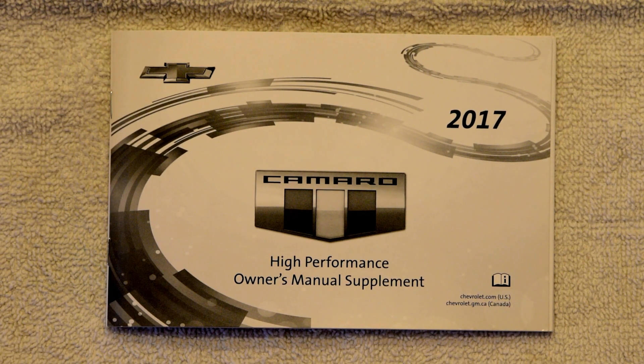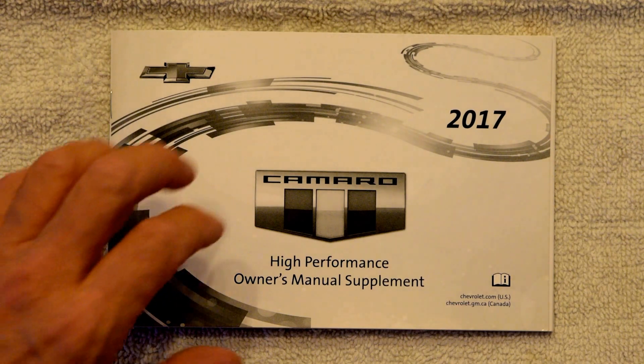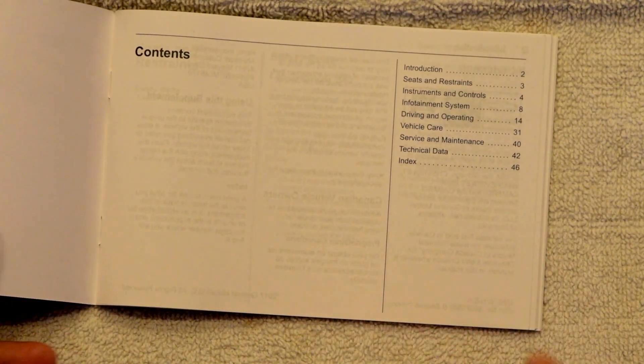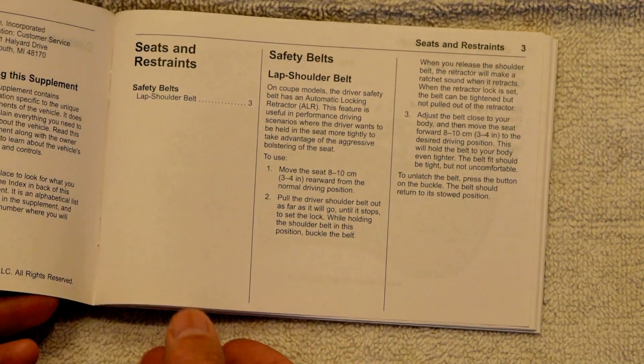This is the Camaro High Performance Owner's Manual Supplement that came with my 2017 ZL1. I believe it works with the SS as well, and I figured it'd be cool to just flip through here in case you need the info, then I can put it on a YouTube video.